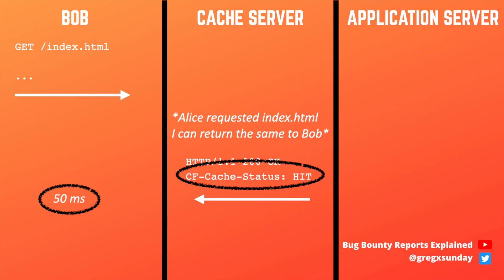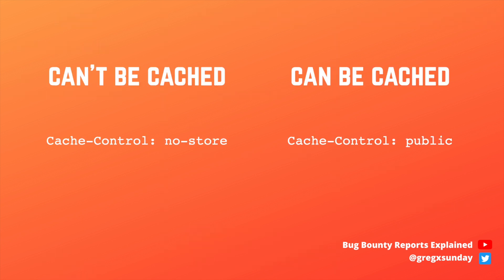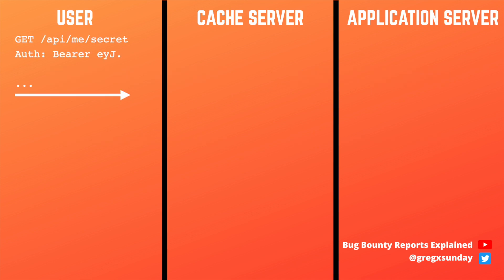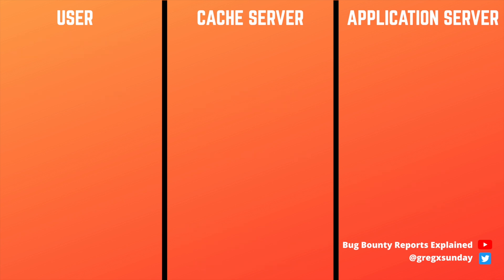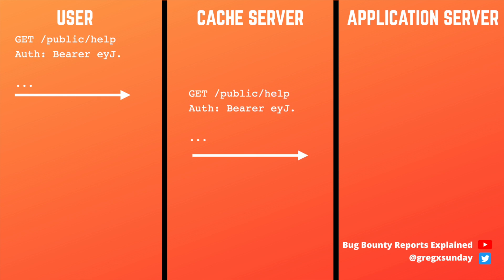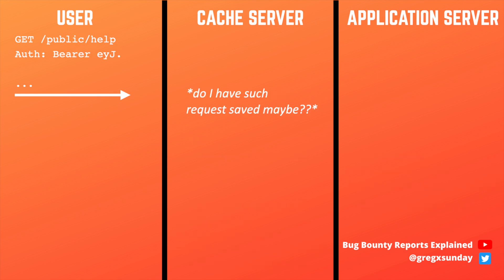Sometimes the server tells us if the response comes from cache or not by using 'hit' or 'miss' in headers. If not, we can determine it based on time, because the response from the cache will be much quicker. But how does it actually cache? The application server sends headers that tell the cache server whether it can store a specific response. For example, a request to a resource that only we have access to must never be cached. But when headers allow it, the cache server saves the response before sending it to the user and stores it for a specified amount of time. Then for each request it decides whether it can use a cached response or has to forward the request to the application server.